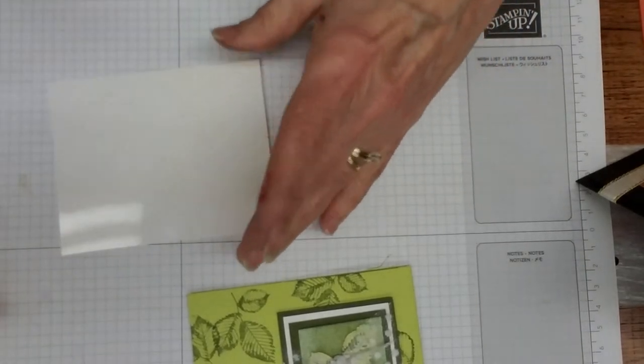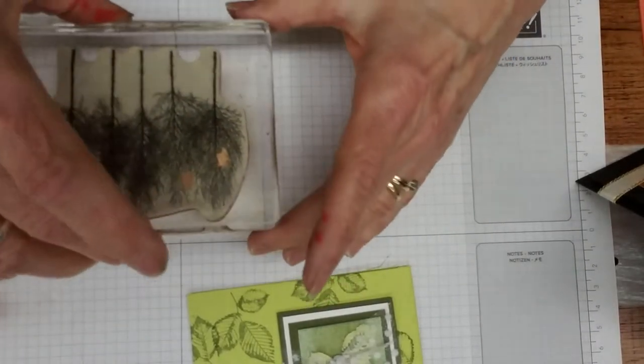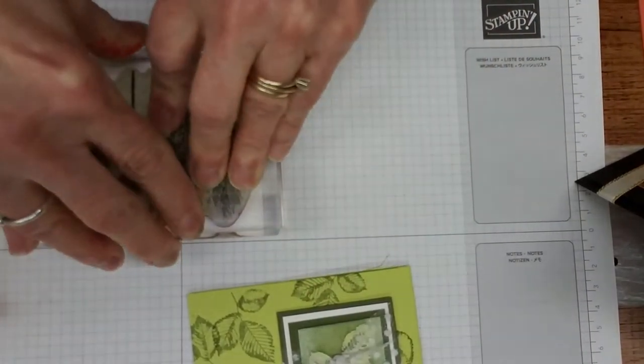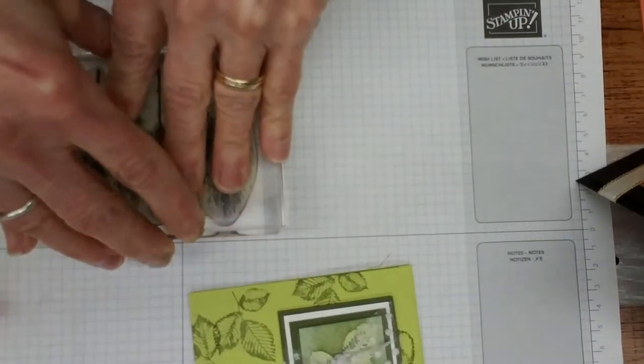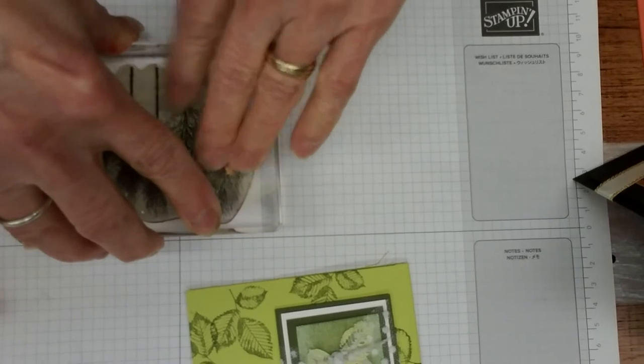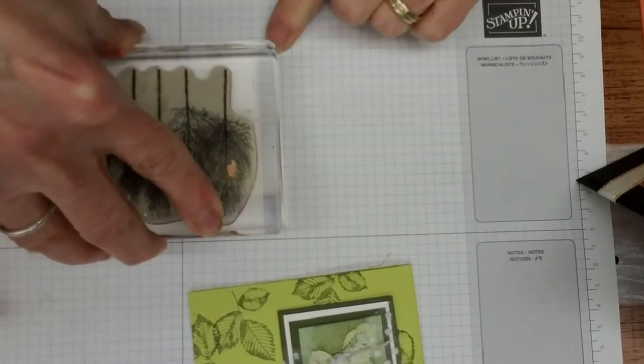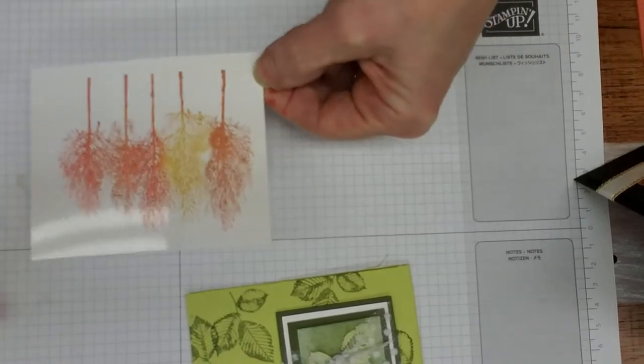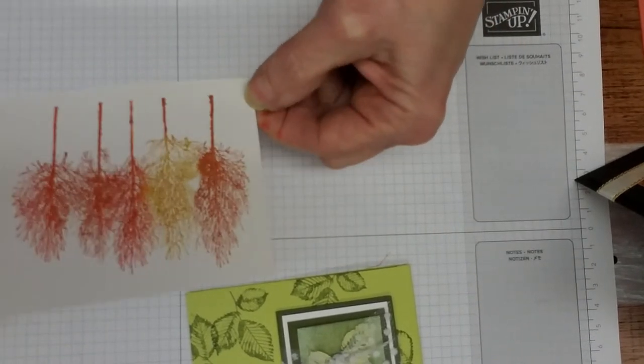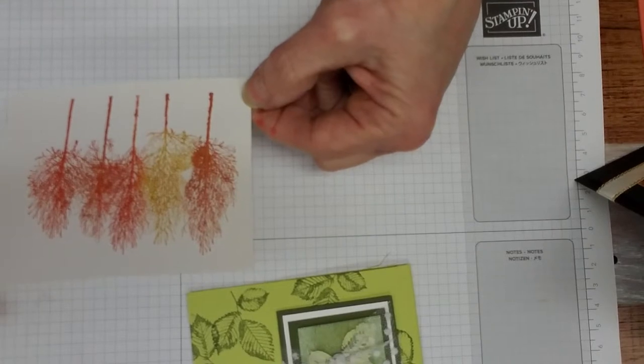Now I'm just going to move this glossy paper right over here and stamp. I want to make sure I get good even pressure so that all those areas are covered. Then pop it up—it will kind of stick. See, that just looks pretty neat right there and it has just a little bit of a sparkle to it.